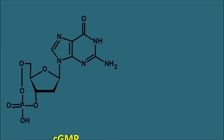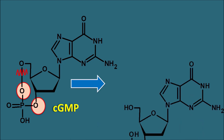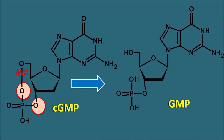Similarly, in cyclic GMP the nucleic acid base is guanine. The phosphorus group is again attached to two oxygens forming a diester bond. Just as with cyclic AMP, this bond is cleaved so that cyclic GMP is converted to GMP — a reaction again mediated by phosphodiesterases.